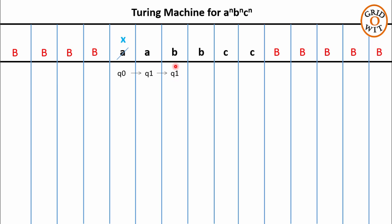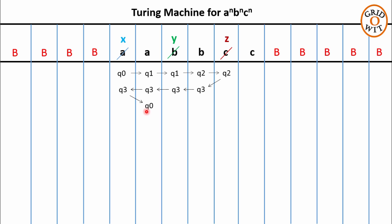Next we have to delete the first b and first c, so the Turing machine will skip the remaining a to reach the first b. q1 on reading b will replace it with y, takes a right move, and changes its state to q2. q2 will skip this b and take a right move to reach the next symbol c. q2 on reading c will replace it with z, takes a left move, and changes its state to q3. The responsibility of q3 is to keep moving towards the left to reach the next a.